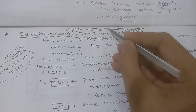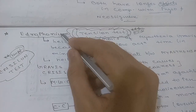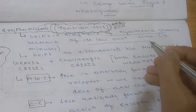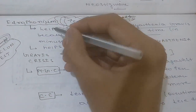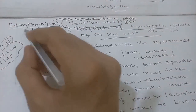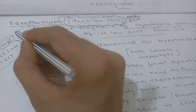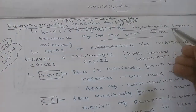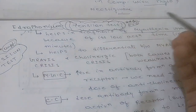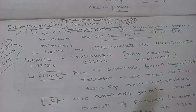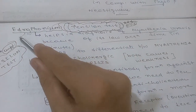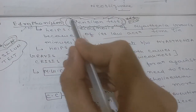Edrophonium is used for the tensilon test. It helps in the diagnosis of myasthenia gravis because of its short duration of action — only 10 to 20 minutes. If a patient suspected of myasthenia gravis is given edrophonium and the condition improves, myasthenia gravis can be diagnosed. Because its action time is very short, any adverse effects will also be short-lived.